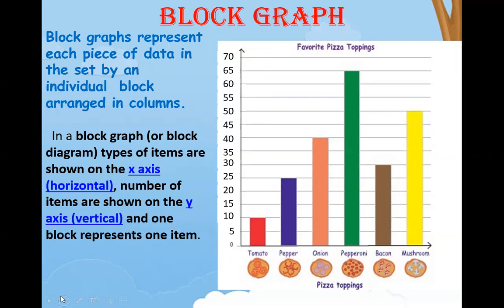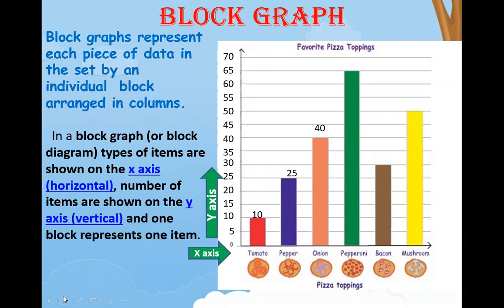One block represents one item. You can see the red column — it is tomato, that is one item. So in the same way, each block represents each item. This is the x-axis and this is the y-axis. How many tomato? 10. Pepper is 25, onion is 40, pepperoni is 65, bacon is 30 and mushroom is 50.